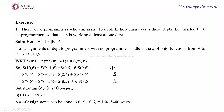Here we substitute the values of m and n. By back-substituting, we get that S(10, 6) = 22827. Therefore, the number of assignments is 6! × S(10, 6) = 6! × 22827 = 16,435,440 ways.